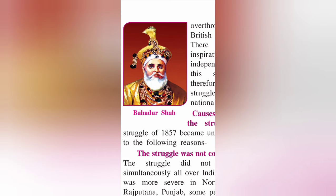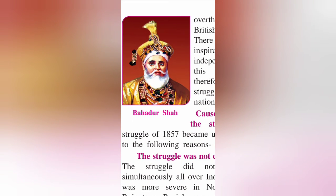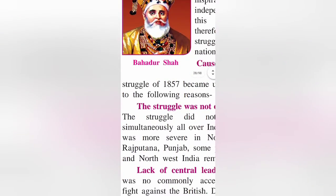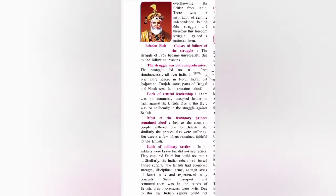Tatya Tope was caught by betrayal and hanged to death. The revolt spread from the army to peasants, farmers, artisans, and common people. We could see almost all strata of society were against the British, and we fought bravely — yet the uprising of 1857 was unsuccessful.